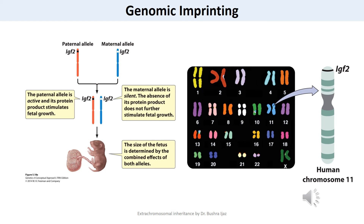Another important phenomenon is genomic imprinting. With regard to autosomal genes, males and females contribute the same number of genes, and paternal and maternal genes have long been assumed to have equal effects. However, the expression of some genes is significantly affected by their parental origin. This phenomenon — differential expression of genetic material depending on whether it is inherited from the male or female parent — is called genomic imprinting. A gene exhibiting genomic imprinting in both mice and humans is IGF2, encoding the protein insulin-like growth factor 2. Offspring inherit one IGF2 allele from their mother and one from their father.